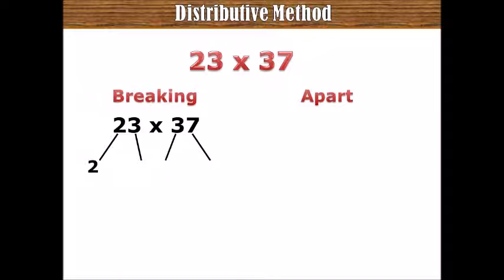So, by breaking them down, you have 20 and then 3, plus 3, that is 23. You break them apart. You have 30 plus 7. That's right.